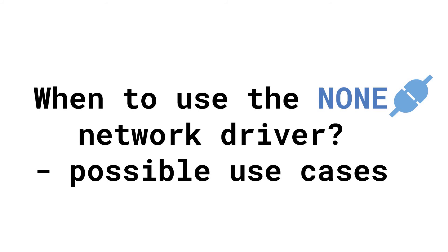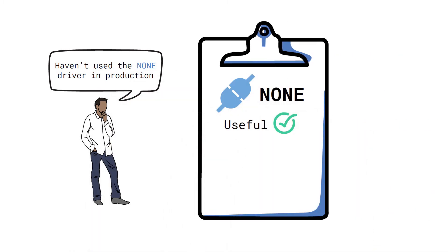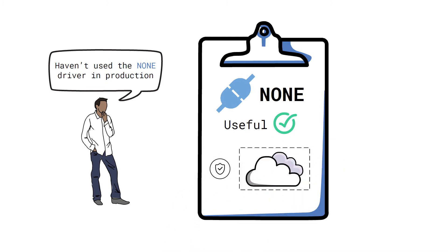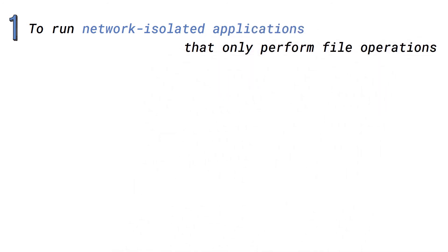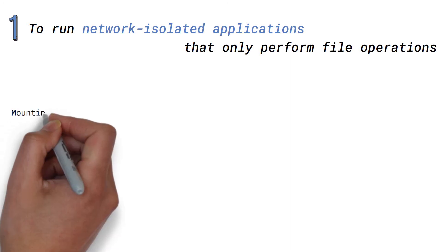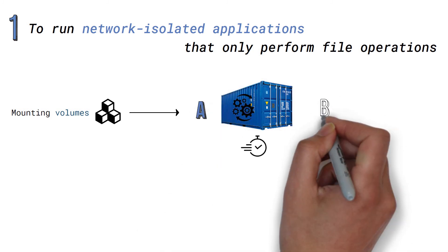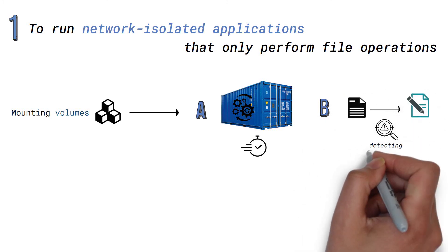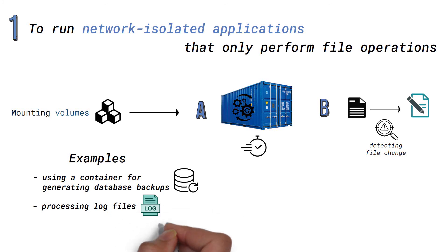Let's look at the possible use cases for the none network driver — that is, when can we use it? While I personally haven't used the none driver in production much, it might still be useful for use cases that require strict network isolation. One niche use case is to run network isolated applications that only perform file operations. This could be done by mounting volumes to the container, which then perform operations after certain intervals or by detecting file changes. Some examples include using a container for generating database backups and processing log files.